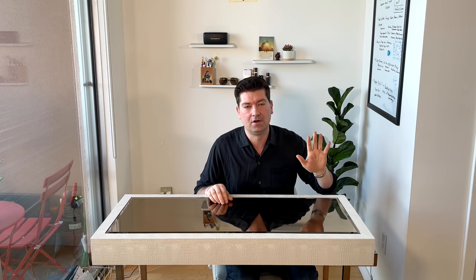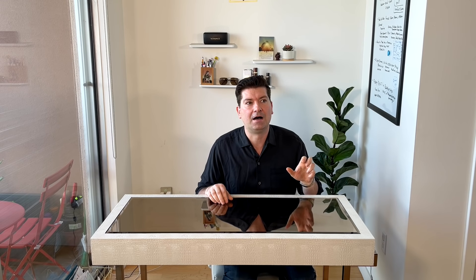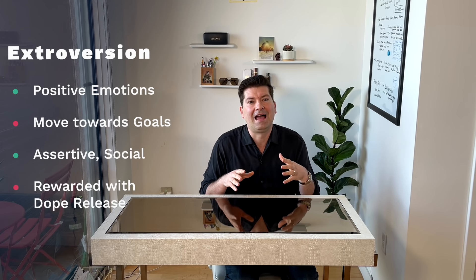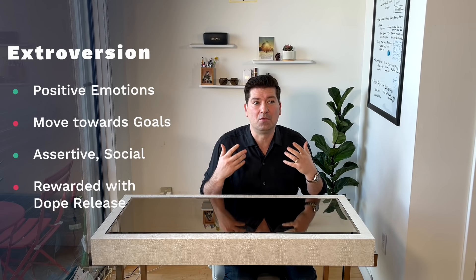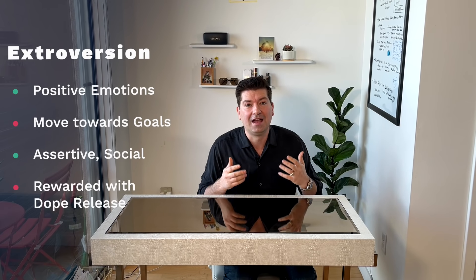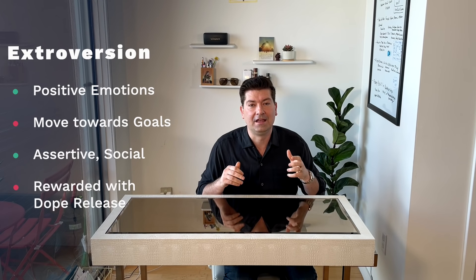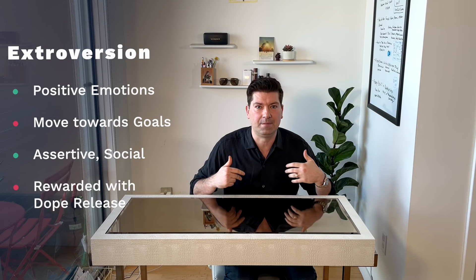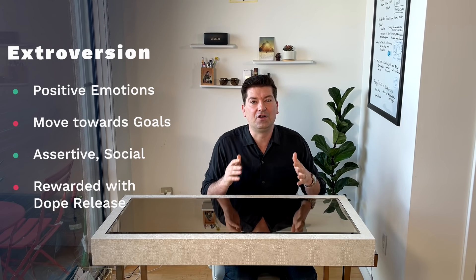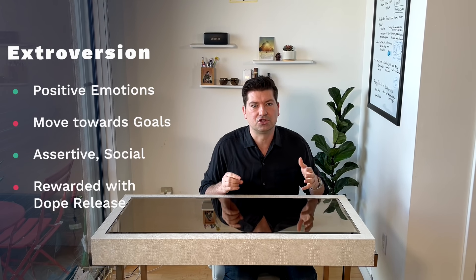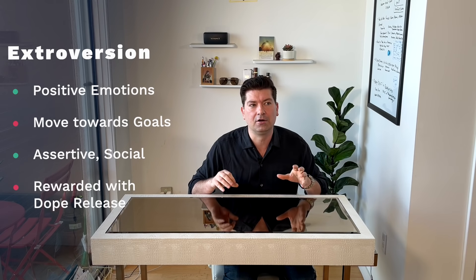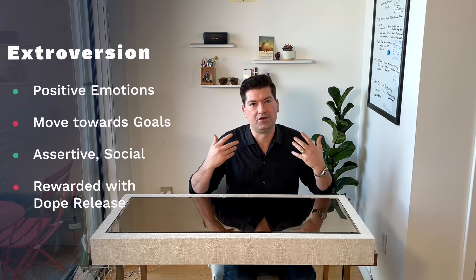Here are the five master traits. The first one is extraversion. The best way to think about extraversion is people that have very positive emotions, that are assertive, and that like to move towards their goals. They feel that if they get their desires met they'll be happy and have their needs met. It's very much ruled by the dopamine cycle — every time someone engages in extroverted behavior, they get rewarded by their brain.